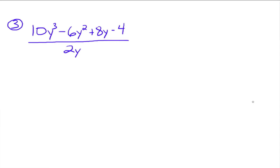Let's try another one. 10y cubed minus 6y squared plus 8y minus 4. That's the polynomial. We're dividing all of that by the monomial 2y. So this time we're going to have four fractions to set up.